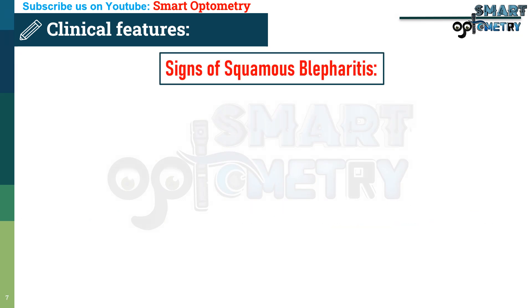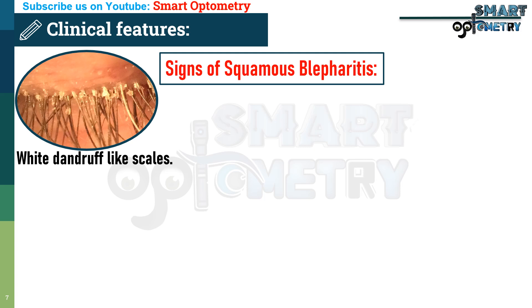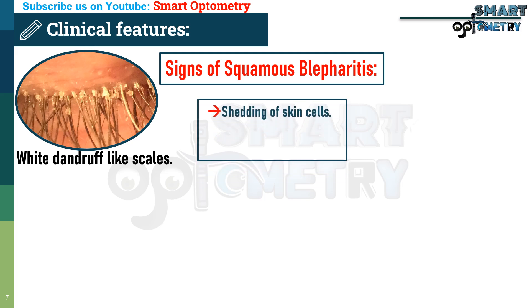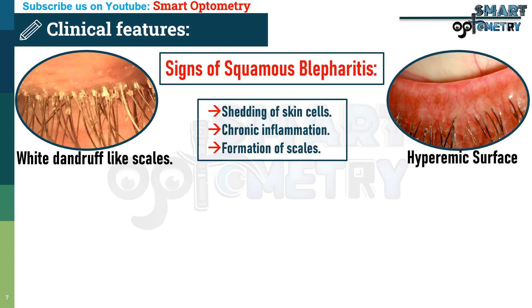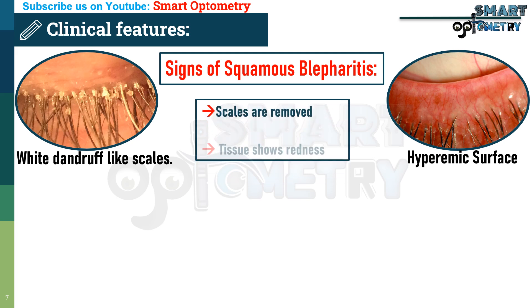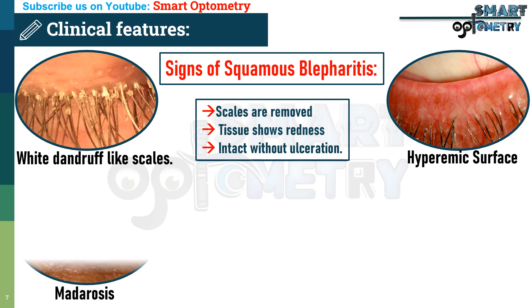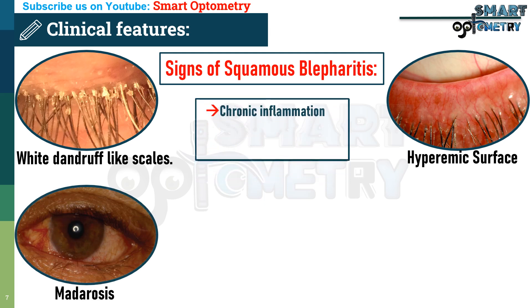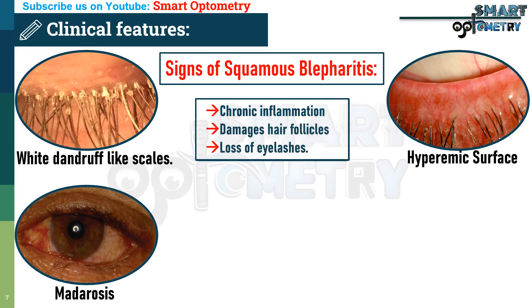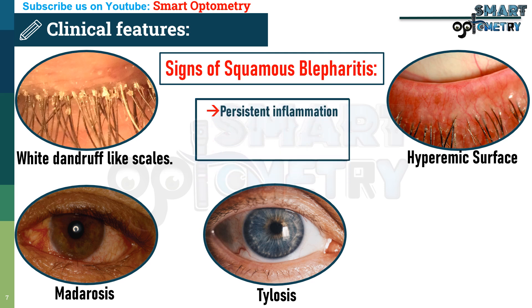Signs of squamous blepharitis: white dandruff-like scales on the lid margins — abnormal shedding of skin cells in chronic inflammation leads to flaky scales along the lid margin. Hyperemic underlying surface: when scales are removed, the underlying tissue shows redness but remains intact without ulceration. Madurosis: falling of the eyelashes — chronic inflammation damages hair follicles, resulting in gradual eyelash loss. Tylosis: thickening of the lid margins due to persistent inflammation and hypertrophy.